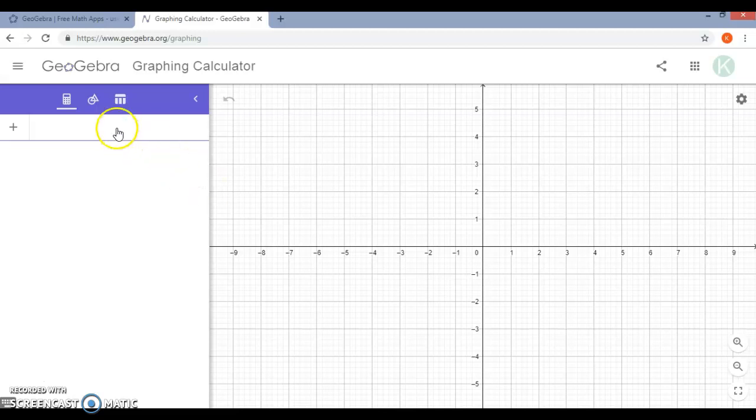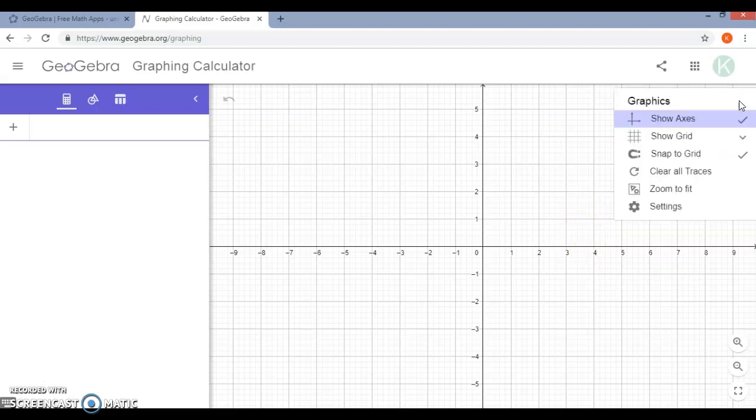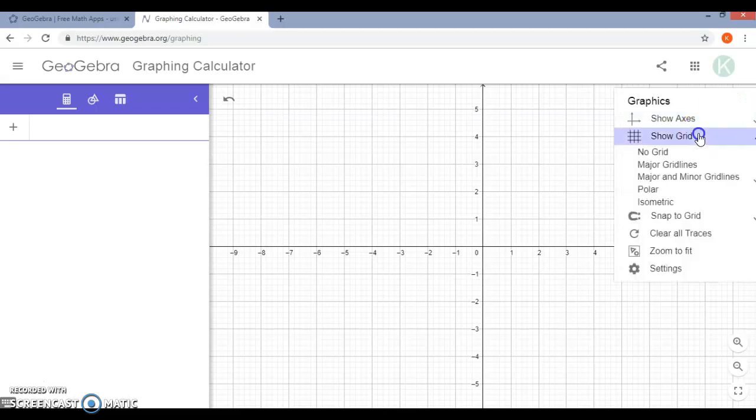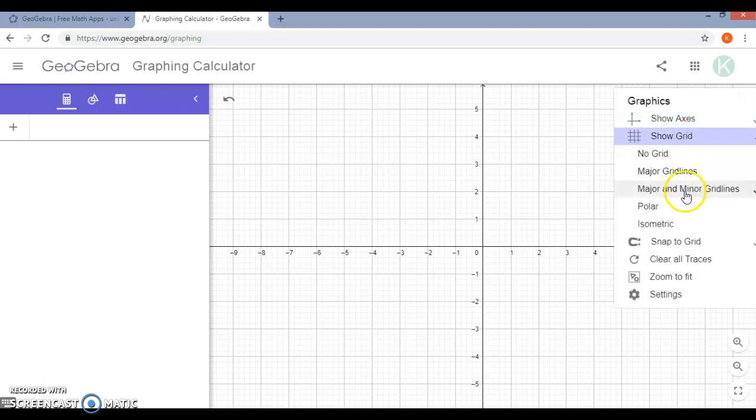We see the input bar over on the left. We have the graph with the grid on the right. If you go over to settings you can change the look of the grid. You can have it show the axes or without. You can change the grid settings. Currently this is showing major and minor gridlines.